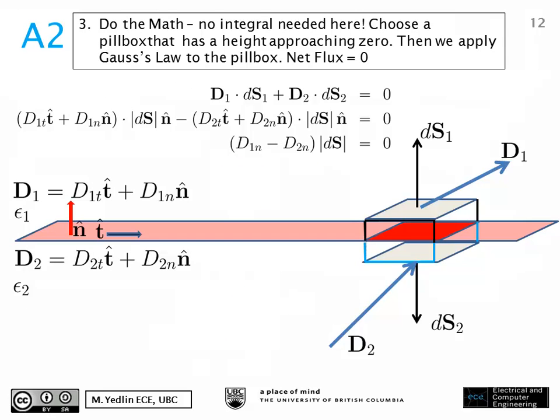In this slide we don't have to do any integrations. We have a small pillbox, so we just compute the flux from the top and the bottom. From the equations, we have D1 dot DS1 from the top plus D2 dot DS2 equals zero. We substitute into the form of DS and take the dot products. Because T-hat dot N-hat is equal to zero, we are just left with the normal components dotted with N-hat dot N-hat. So we have D1N and D2N, with the sign coming from the fact that the outward normal below is pointing down.